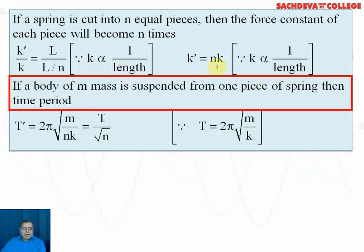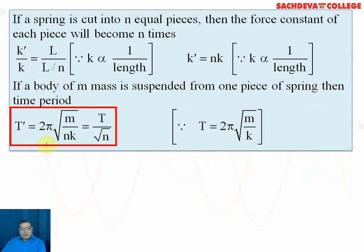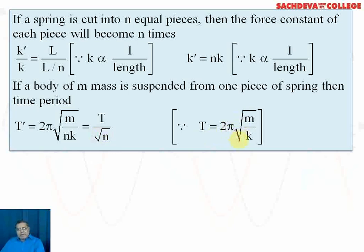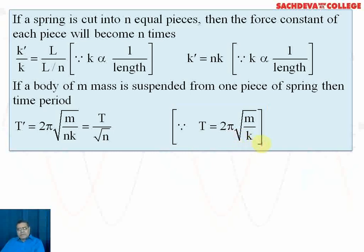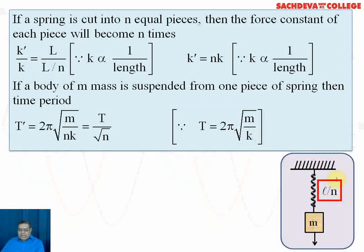If a body of mass m is suspended from one piece of the spring, the time period is T' = 2π√(m/(nk)). Since T = 2π√(m/k), we have T' = T/√n. The spring has n equal parts each of length l/n; mass is suspended and when stretched downward and released, the spring exhibits harmonic oscillations.